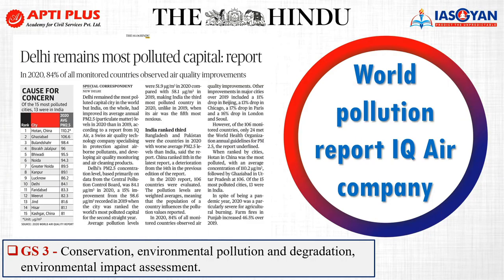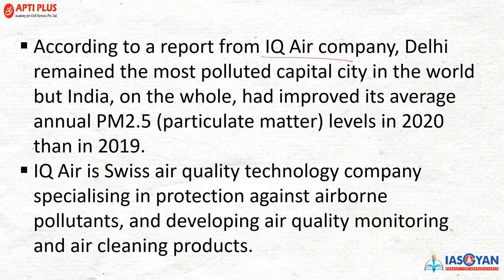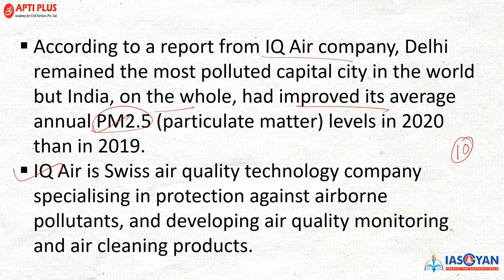The second news is the World Pollution Report by AQ Air Company. Delhi remains the most polluted city in the world. This is important for General Studies Paper 3 on conservation, environment, pollution, degradation and EIA. According to the AQ Air report, Delhi's annual PM 2.5 — particulate matter — level was 84 micrograms in 2020, a 15% improvement from 98.6 micrograms recorded in 2019, yet it was ranked the world's most polluted capital city for the second consecutive year. AQ Air is a Swiss technology-based company specializing in protection against airborne pollutants and air quality monitoring.